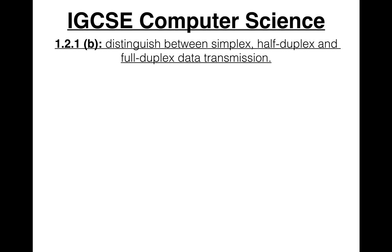IGCSE Computer Science syllabus statement 1.2.1b: distinguish between simplex, half-duplex, and full-duplex data transmission. When we look at these three terms, we're talking about the direction of data transmission.